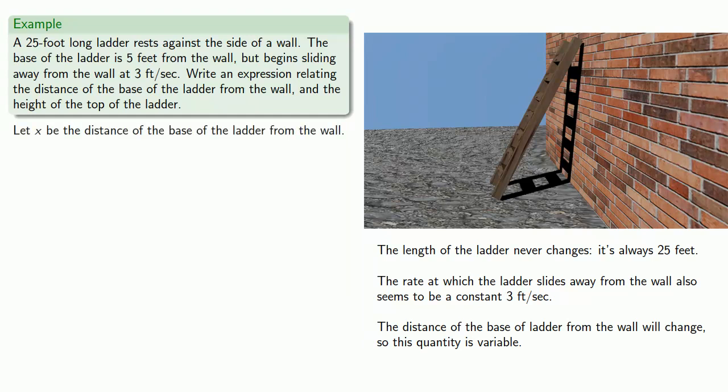So in this case, we determined that x, the distance of the base of the ladder from the wall, and y, the height of the top of the ladder, were both variables, while the length of the ladder was a constant, 25. So ignoring what we're actually trying to find, let's see if we can write down any relationship at all among these variables.